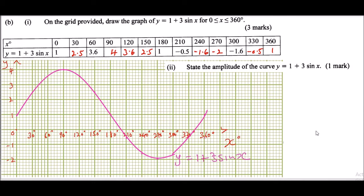Part B(ii): state the amplitude of the curve y equals 1 plus 3 sin x. If you look at the curve, it starts from 1, reaches a maximum of 4, and a minimum of minus 2. Drawing a midline at y=1, you can count that the amplitude — the distance from the midline to the peak — is 1, 2, 3. Therefore the amplitude equals 3.